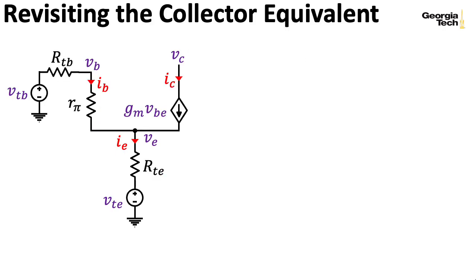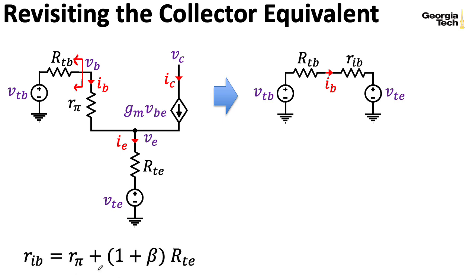This Thevenin equivalent circuit looking into the base can give us a new perspective on the Norton equivalent circuit looking into the collector that we computed last time. So in that lecture we had a Thevenin equivalent voltage and a Thevenin equivalent resistance looking out of the base. And now we can replace the small signal model with our Norton equivalent circuit to easily get IB. So recall RIB is this R pi plus one plus beta RTE expression. So I can find IB using Ohm's law, it's just the difference between these Thevenin equivalent voltage sources for the base and the emitter, divided by the series combination of resistances.